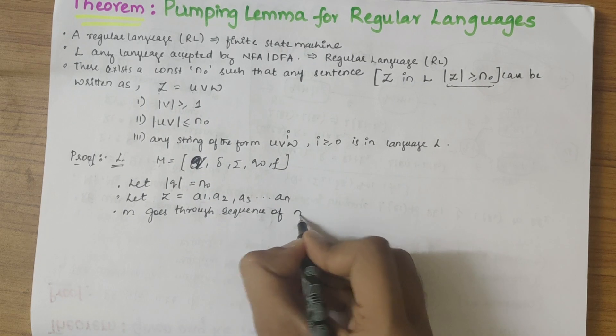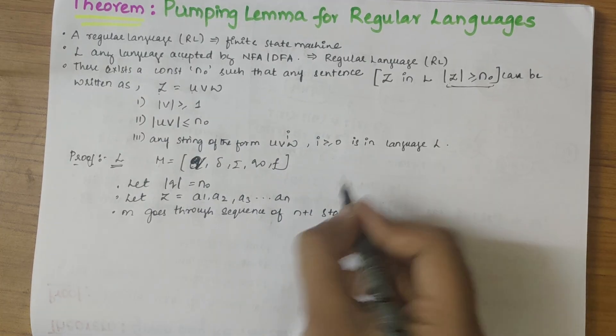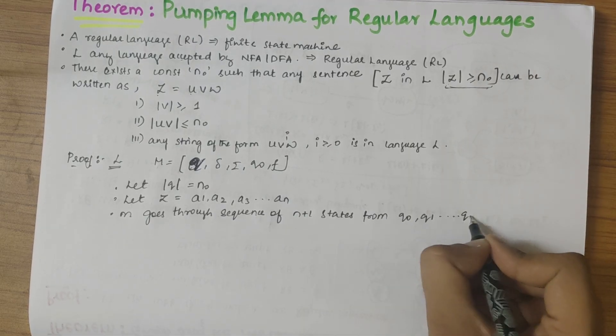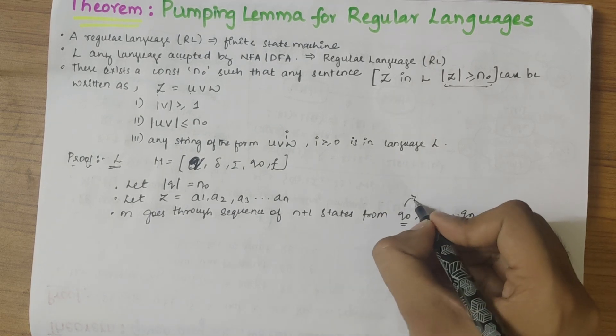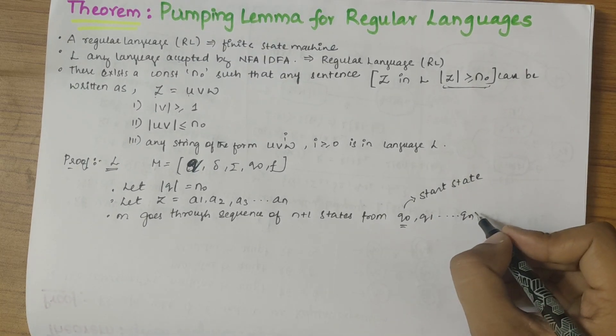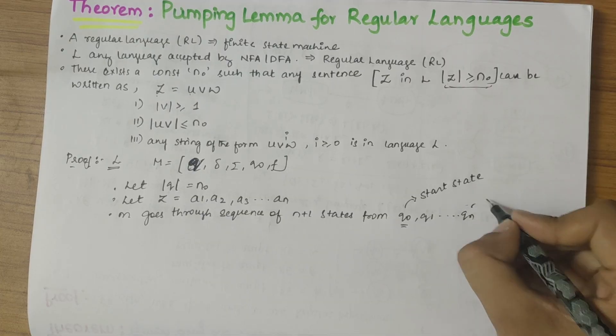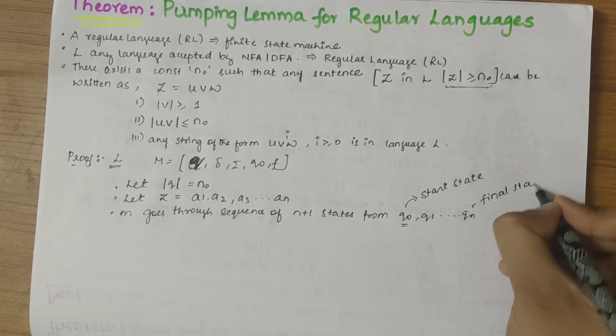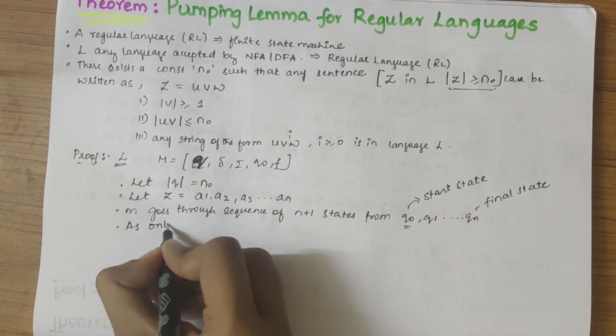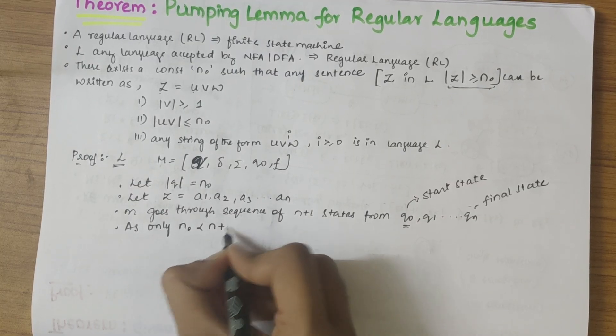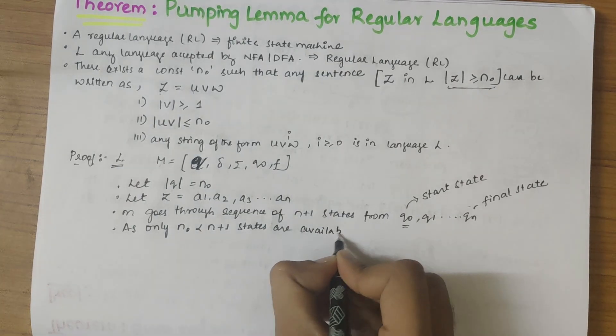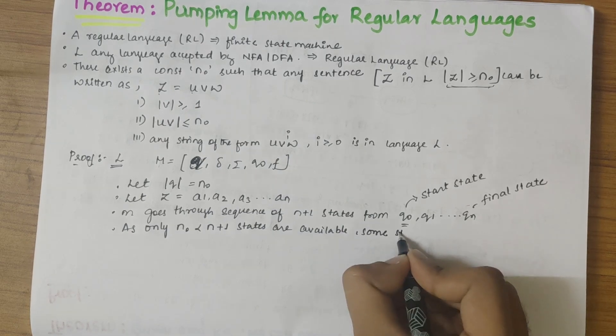of n plus 1 states from q naught being the start state, from q naught, q1 to qn, where q naught belongs to the start state and qn or qf being the final state or the accepting state while accepting the z. So as n0 is less than n plus one states are available, some states would be repeated.